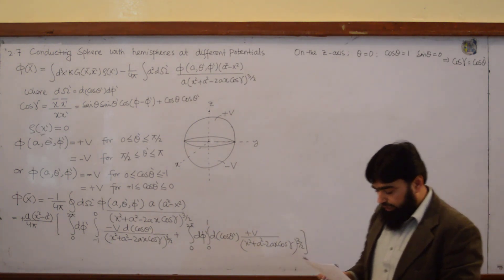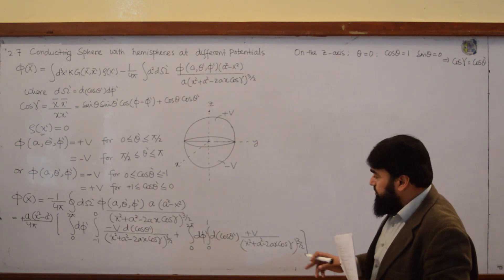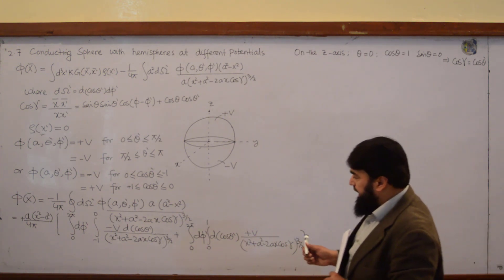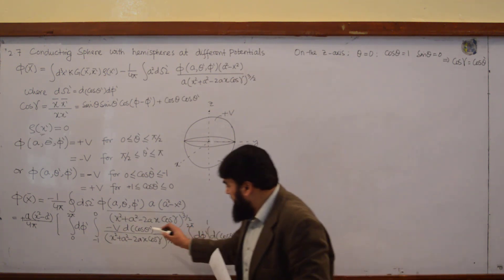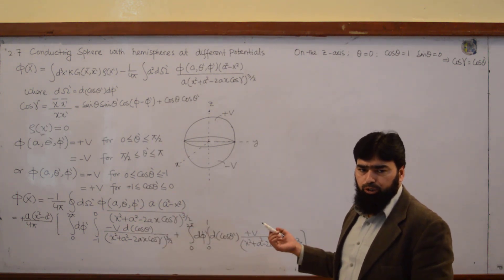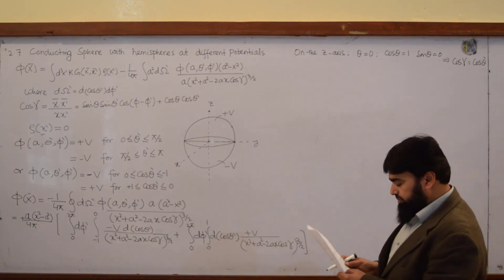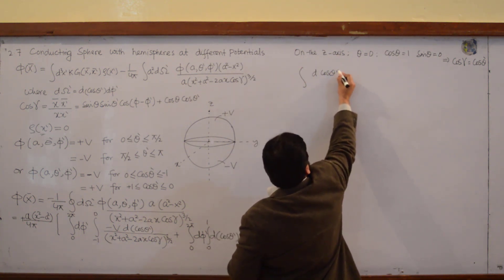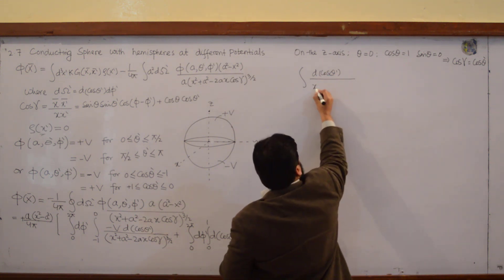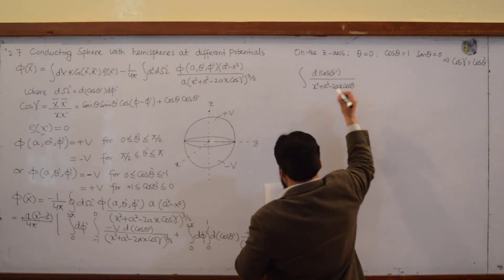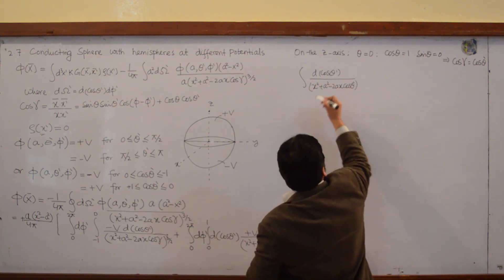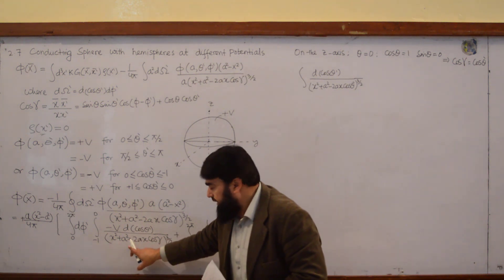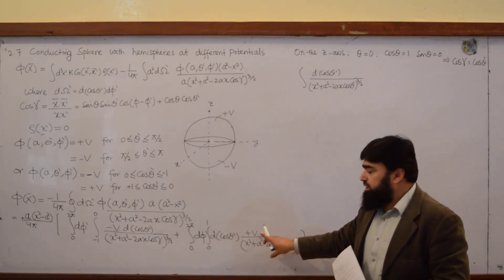If we are only on the z-axis, then cos(γ) = cos(θ'), and our integral reduces. I write only the first portion and multiply by 2 because they are symmetric. The simplified integral becomes: d(cos θ') divided by x² + a² − 2ax·cos(θ'), all to the power 3/2.